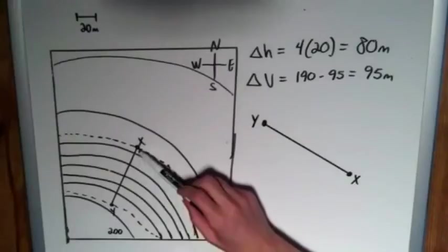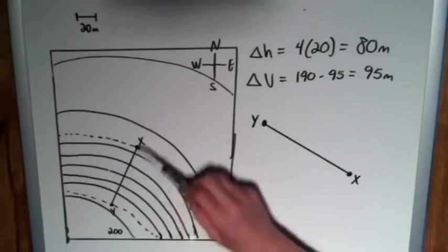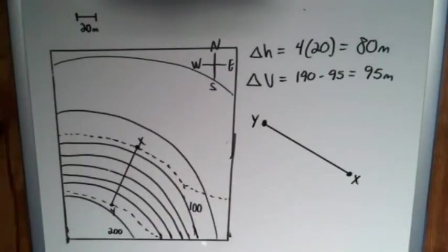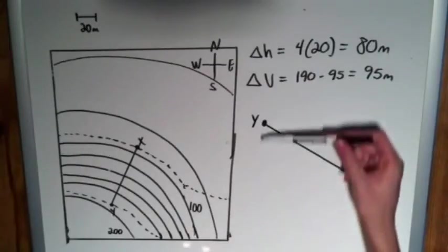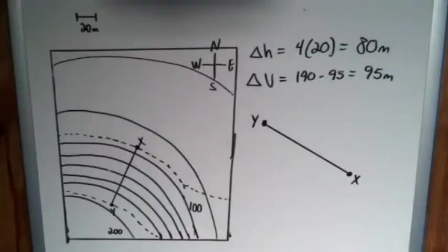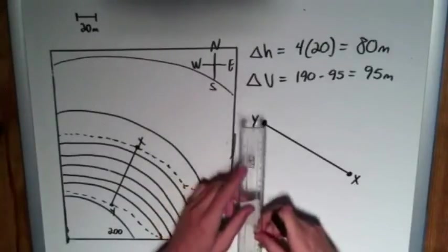And so we can set up a right triangle using our delta h and delta v when we think of, okay, the horizontal change is going to be the distance we move forward or backwards or to the side. That's going to be our distance across horizontally on the triangle, and our delta v is going to be the vertical. So we can just sort of finish this triangle here.